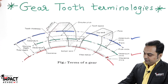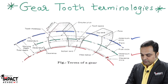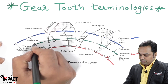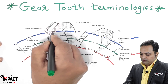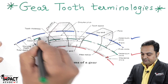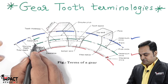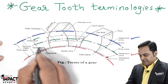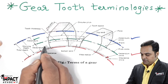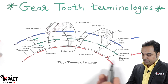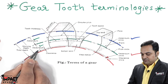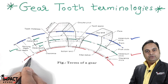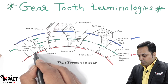The radial distance measured from the pitch circle diameter up to the top of the teeth is called the addendum. The radial distance between the pitch circle diameter and the dedendum circle diameter is called the dedendum. Addendum plus dedendum is called the total depth.